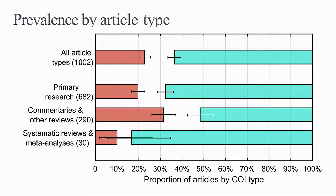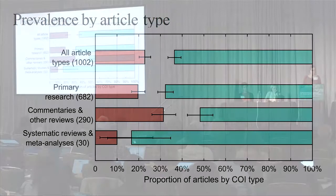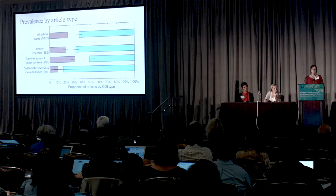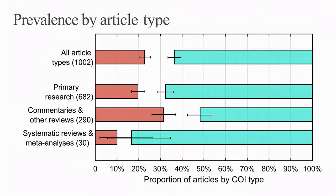This graph shows the proportion of articles with disclosed conflicts of interest in orange, a missing conflict of interest statement in white, and a statement of no conflict of interest in green, in aggregate and then by article type. The horizontal lines represent a 95% confidence interval on the prevalence. Overall, 23% of articles in our sample disclosed a conflict of interest. About two-thirds made a statement that the authors had no conflicts, and only 14% were missing a conflict of interest statement. When broken down by article type, the prevalence of disclosed conflict was significantly higher at about 31% among commentaries, editorials, and narrative reviews, in contrast to primary research sitting at about 19%.